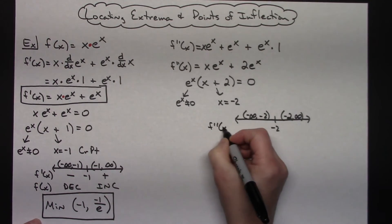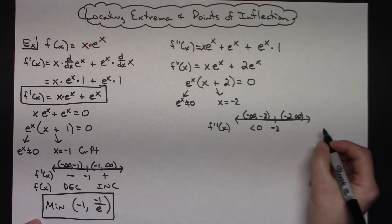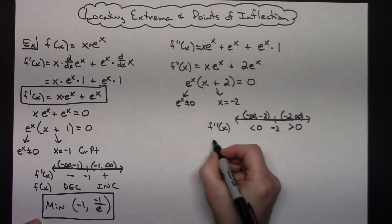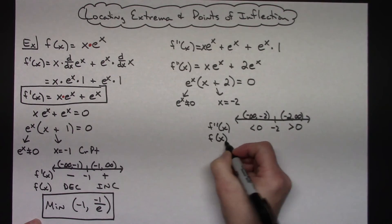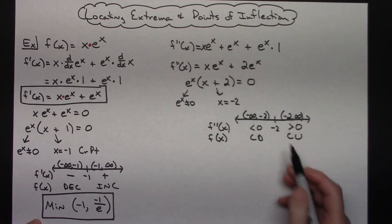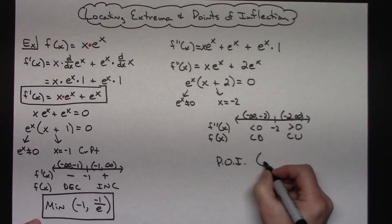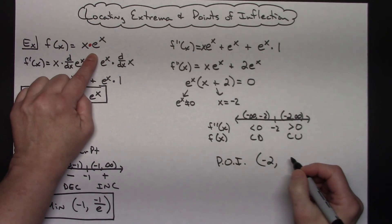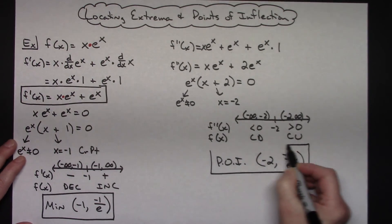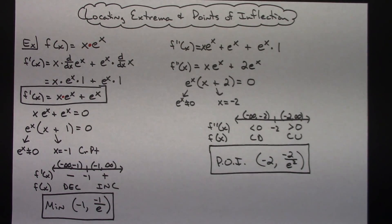Testing values in the second derivative: plugging in a value from the left interval gives a result less than 0, and plugging in 0 gives a positive result. That tells me the original function is concave down on the left interval and concave up on the right interval — so yes, that is indeed a point of inflection at x equals negative 2. Plugging back into the original function gives the inflection point at negative 2 comma negative 2 over e squared. That's one example of locating extrema and points of inflection for a function involving e to the x.